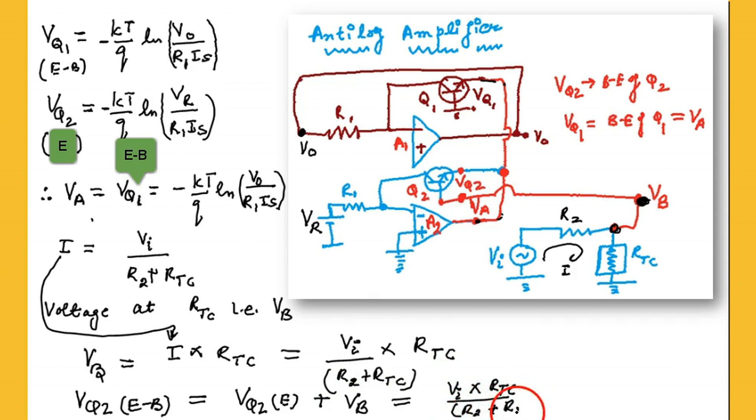So we are having VQ2, we are having the VB value, just substituting here the value of VQ2 as well as VB. So this is VB, and VB is in plus, but VQ2 is in negative side.